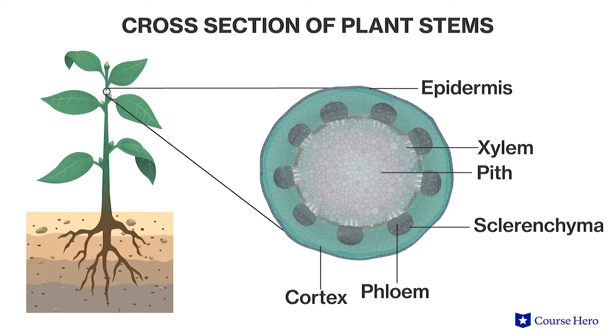Just under the epidermis is the cortex. This layer is composed mostly of parenchyma cells and functions to transport materials to the roots and to store carbohydrates.